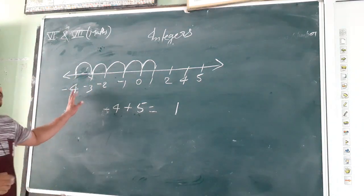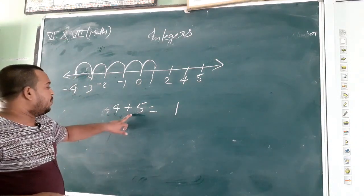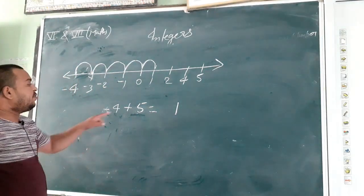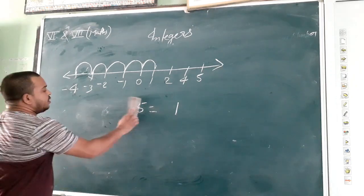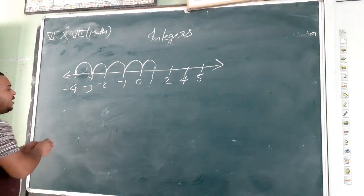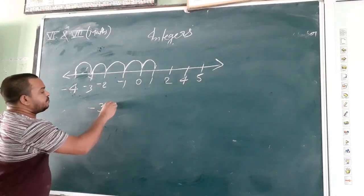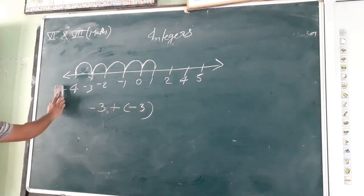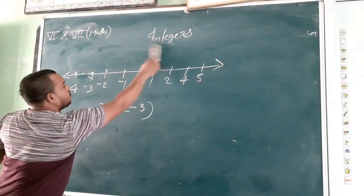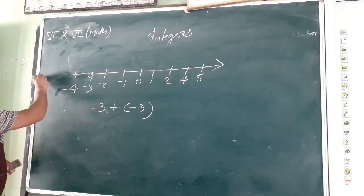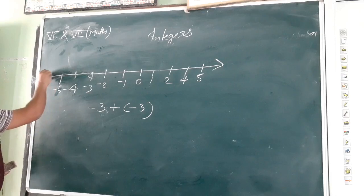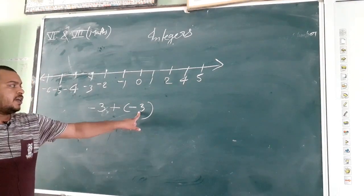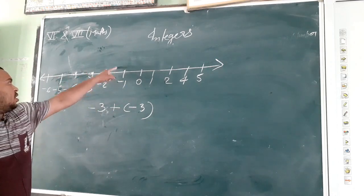So if we have to add a positive number, we will move towards the right on the number line. But what happens if we have to add negative numbers? If we have to add a negative number, we will move towards the left.